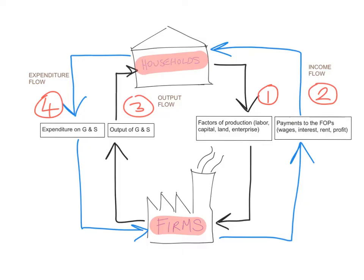In the circular flow, households — the consumers — are the owners of the factors of production: land, capital, labour, and enterprise. They give their factors of production to the firms, and the firms use those factors of production to produce the output of goods and services. This is the output flow.